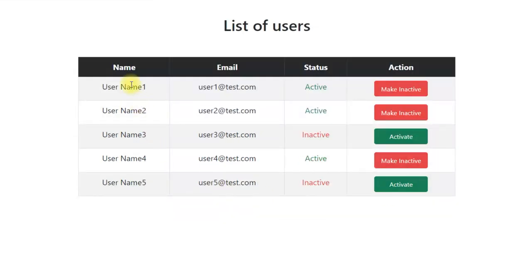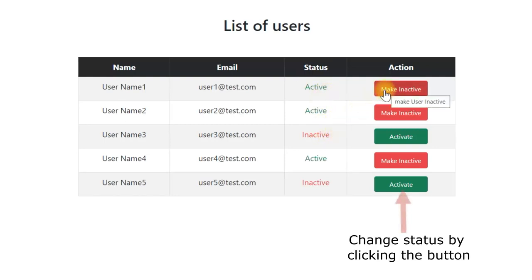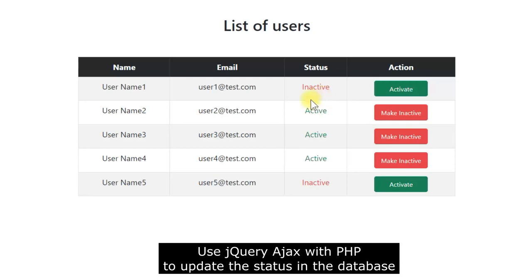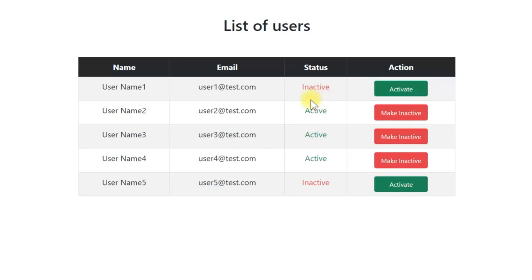We have a list of users showing user details along with user status. User status can be active or inactive, and there is a button to change the user status. Clicking it toggles between active and inactive, updating the user status in the database. By clicking this button, we call an AJAX script which calls a PHP program that updates the database, and then we refresh the HTML table. This is a simple application we'll develop in PHP and MySQL with AJAX.